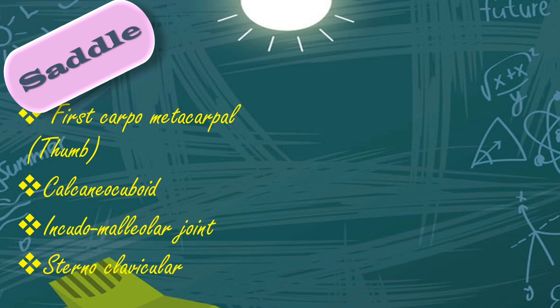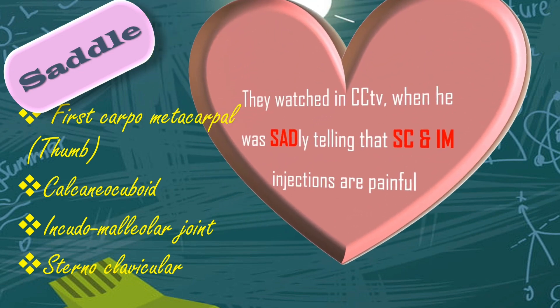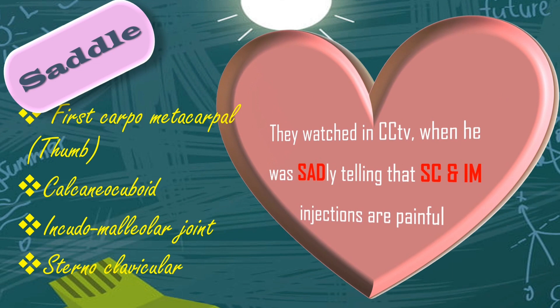Next one: saddle joint. The story is: they watched in CCTV when he was sadly telling that subcutaneous and IM injections are painful. CCTV is to mention calcaneo-cuboid joint. Sadly is for saddle joint. Subcutaneous is to mention sternoclavicular joint. IM is to mention incudomalleolar joint. They are showing their thumbs up sign, so that is to mention the thumb — first carpometacarpal joint.